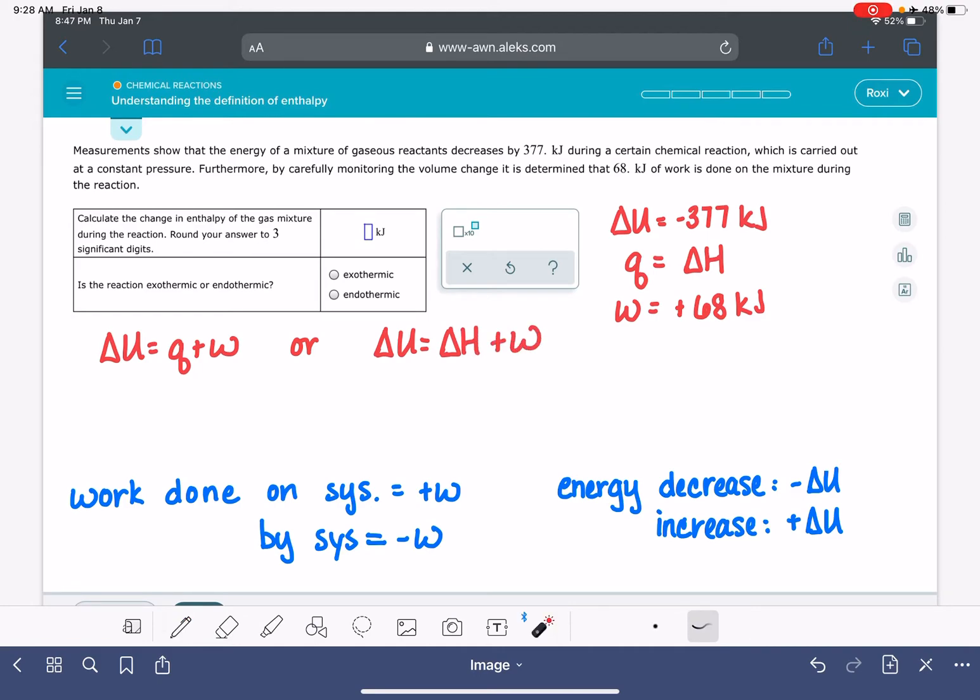And it wants us to solve for the value of delta H. So we'll plug in our delta U value, negative 377 kilojoules. And we'll also plug in our w value, 68 kilojoules. And then we'll just use some basic math to solve for the value of delta H, which is negative 445 kilojoules.